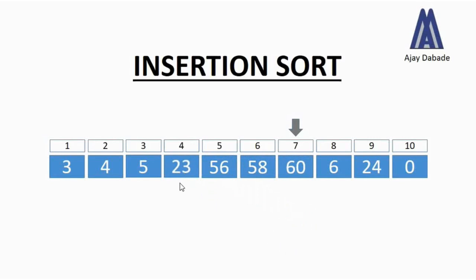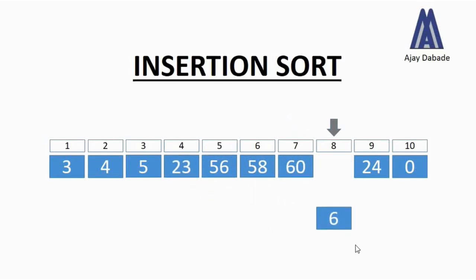At the next position we have the number 6. We compare it with the numbers on the left-hand side. Number 6 is less than 60, 58, 56, and 23, so we shift those four numbers towards the right and then place the number 6 at its right position.